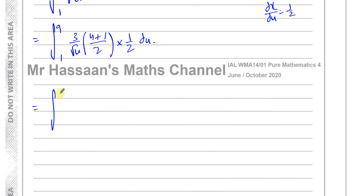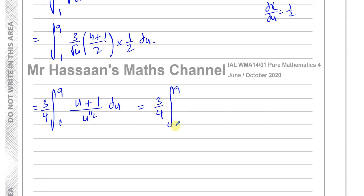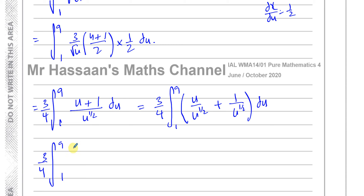Simplifying: the integral from 9 to 1 of (3/4) times (u plus 1) over u to the power of a half, du. I can write 3/4 outside and split into two separate fractions: u over u to the power of a half, plus 1 over u to the power of a half. Simplifying the powers — subtracting exponents — gives u to the power of a half plus u to the power of negative a half.